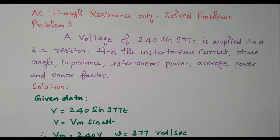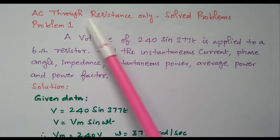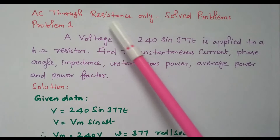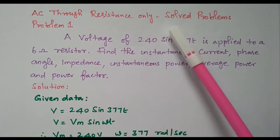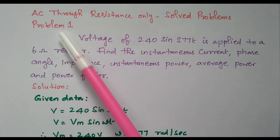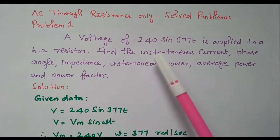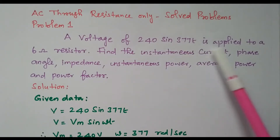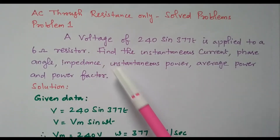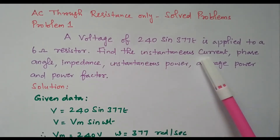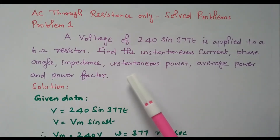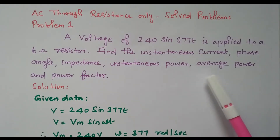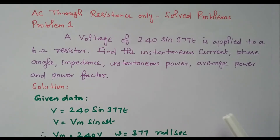Welcome viewers. In this video we will see solved problems based on AC through a resistance only — the circuit containing only resistance. Problem one: a voltage of 240 sin 377t is applied to a 6 ohm resistor. We need to find the instantaneous current, phase angle, impedance, instantaneous power, average power, and power factor.